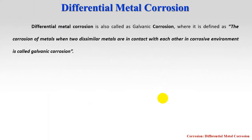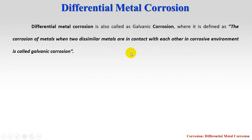Differential metal corrosion is also called galvanic corrosion. It is defined as the corrosion that occurs when two dissimilar or different metals are in contact with each other in a corrosive environment. Galvanic corrosion occurs when two different metals are placed in a corrosive environment.